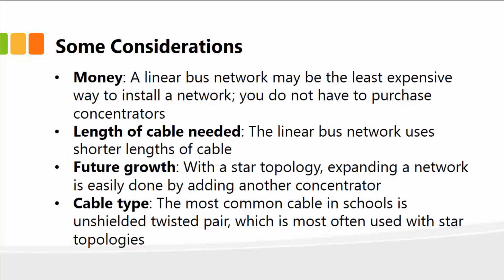Here are some important considerations. First is money — a linear bus network may be the least expensive way to install a network since you don't have to purchase concentrators, switches, or hubs. Second is cable length — the linear bus network uses shorter lengths of cable. As far as future growth is concerned, with the star topology expanding a network is really easy. The most common cable type in a school or company network is unshielded twisted pair, which is most often used with star topologies.